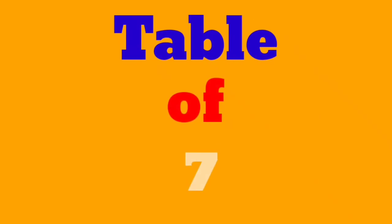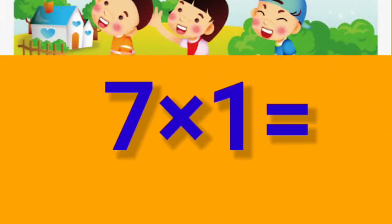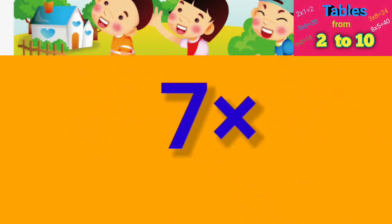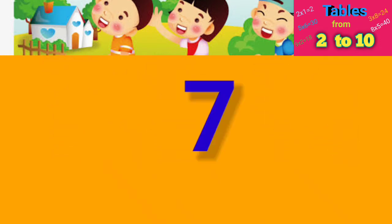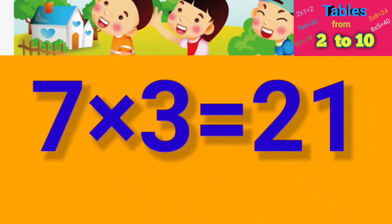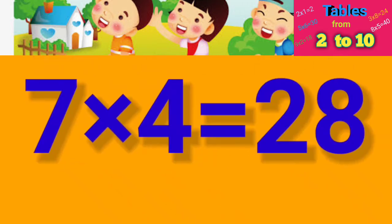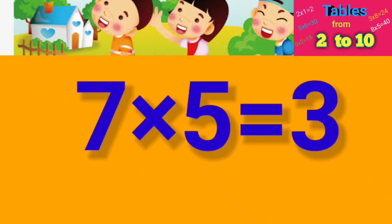Table of 7: Seven one's are seven, seven two's are fourteen, seven three's are twenty-one, seven four's are twenty-eight, seven five's are thirty-five.